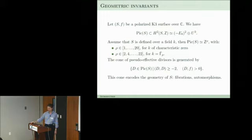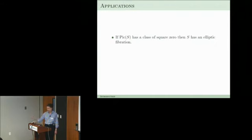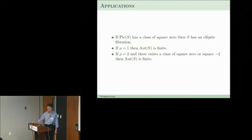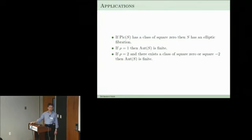That cone governs a lot of the geometry. We can understand fibration structures, and for questions like density of rational points you would like to know about elliptic fibrations. We are also interested in automorphisms. If the Picard lattice represents zero then there is an elliptic fibration. In Picard rank 1 there are only finitely many automorphisms; in rank 2 you can write down when the automorphism group is finite or not. All of this is useful in arithmetic.